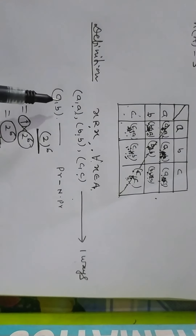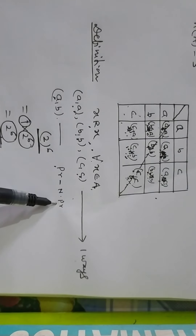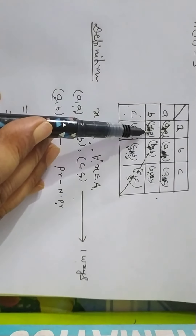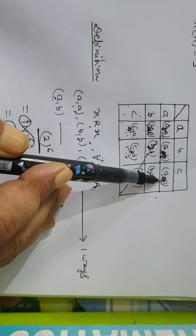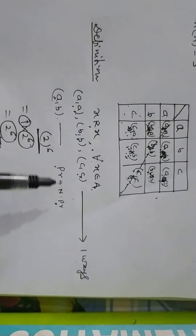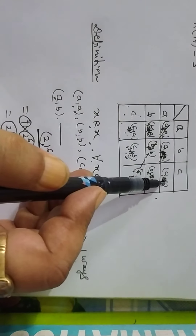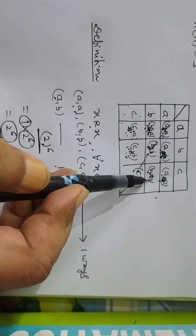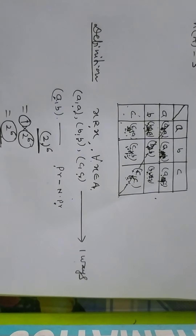So (A,A) is present, (B,B) is present, (C,C) is present — these are mandatory. But (A,B) may be present or not present, (B,A) may be present or not, (A,C) may be present or not, (B,C) may be present or not, (C,A) may be present or not, (C,B) may be present or not. So 'may be present or not present' is counted as two ways. The non-diagonal elements (A,B), (A,C), (B,C), (B,A), (C,A), (C,B) appear six times, giving 2 to the power six.